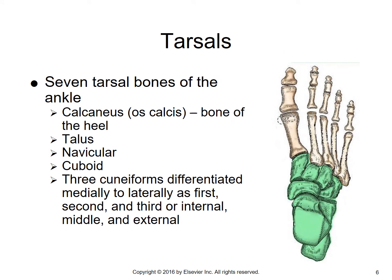Then we get to our tarsals. There are a total of seven tarsal bones that make up the foot. We've got the calcaneus, the talus, and the navicular — those are more of the posterior bones of the foot. Our anterior bones would be the three cuneiforms, labeled from medial to lateral: the medial cuneiform (first), the intermediate cuneiform (second), and the lateral cuneiform (third).